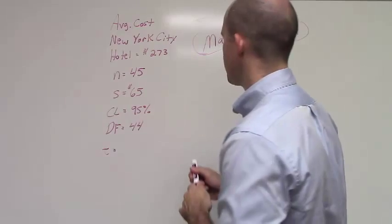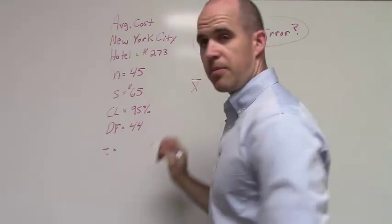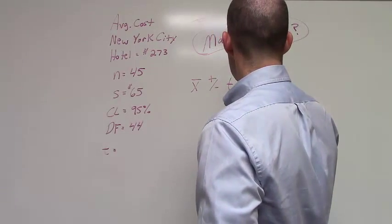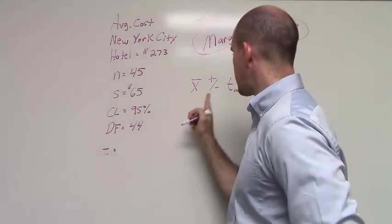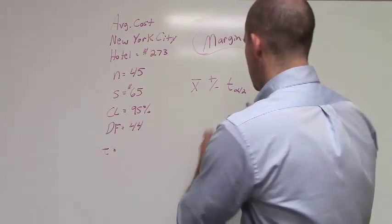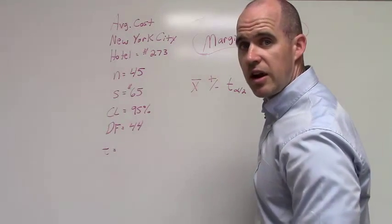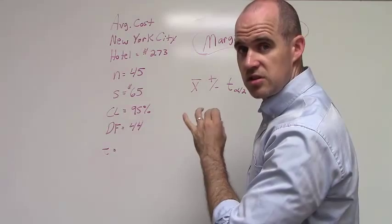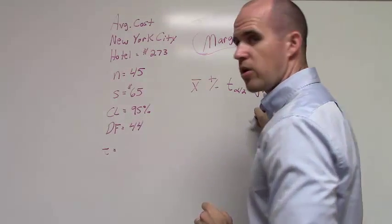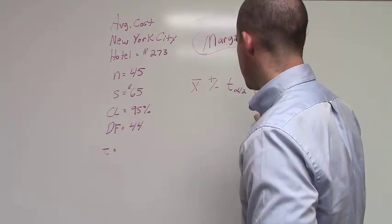Now, recall that our formula for the margin of error is our sample mean plus or minus T alpha divided by 2. And again, it's T because we don't know the population standard deviation. And then we're multiplying this by our standard error. And notice that our standard error is just S, the sample standard deviation divided by the square root of the sample size.